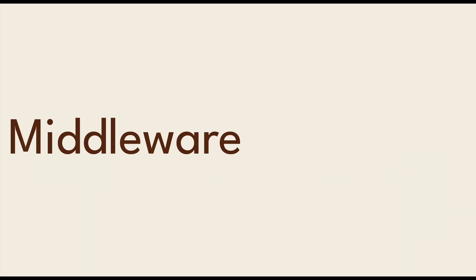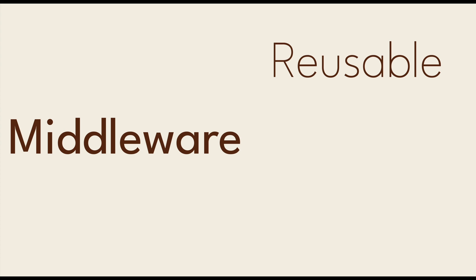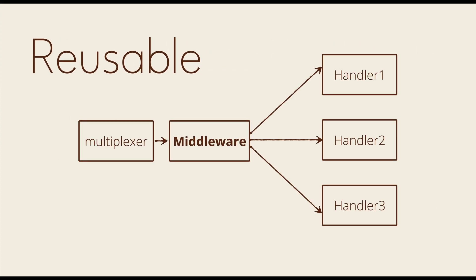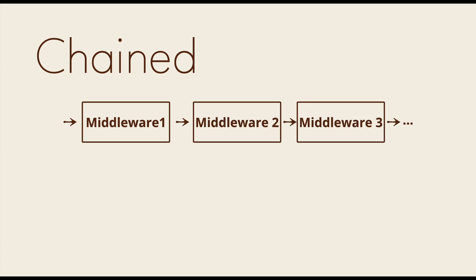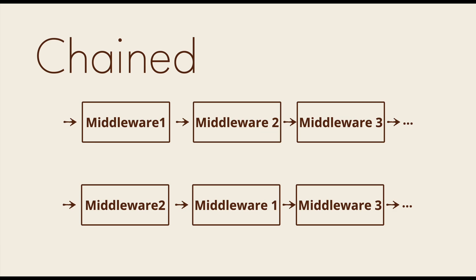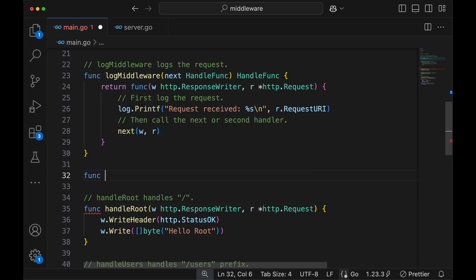Middlewares have two important properties: one, they are reusable, and two, they can be chained. Reusability means middlewares are usually stateless functions that can be used for multiple handlers — you define them once and call them across multiple different handlers. They can be chained one after another as many times as you want, compounding their effects. Not only that, their order can be changed for different requests. In this video, let's look at both of these concepts in detail.